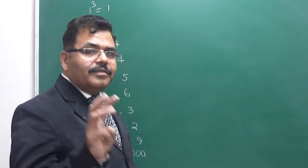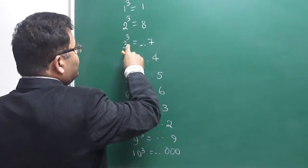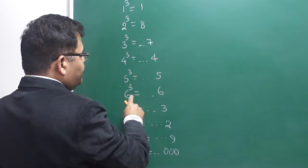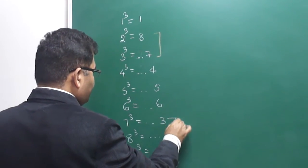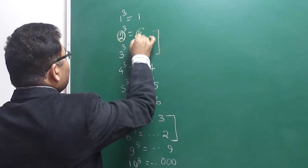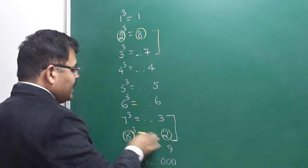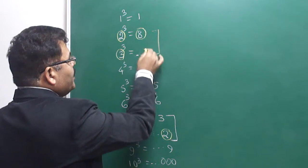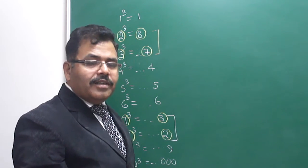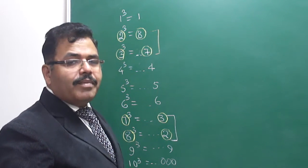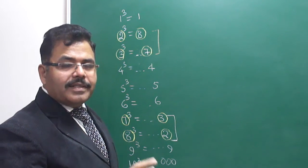Now you need to remember two things. First, what will happen at the unit place if you cube a number: 1 cubed is 1, 2 cubed gives 8 at unit place, 3 cubed gives 7, 4 gives 4, 5 gives 5, 6 gives 6, 7 gives 3, 8 gives 2. Here, only 2 things you need to remember: 2 and 8 have an inter-transformation — if 2 is cubed, unit place is 8, and if 8 is cubed, unit place is 2. They are inverses of each other. Similarly, 3 cubed gives 7 at the unit place, and 7 cubed gives 3. Rest of the numbers are same at their unit position, so those are not a matter of worry. You only need to remember: 2 and 8 are pairs, and 3 and 7 are pairs.